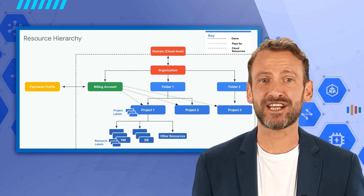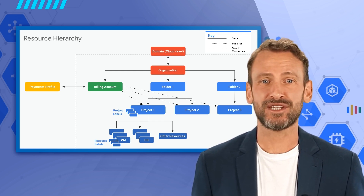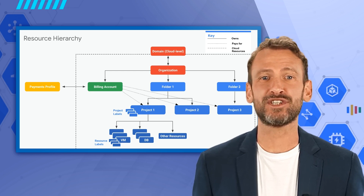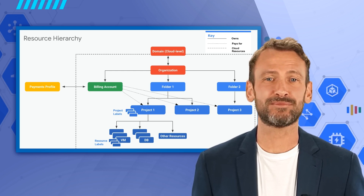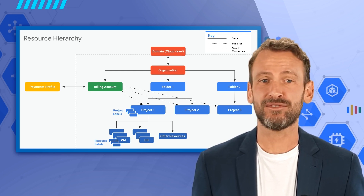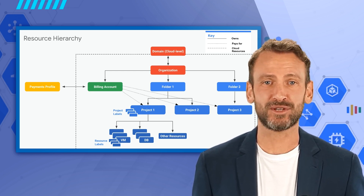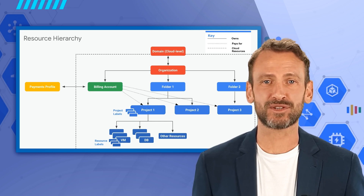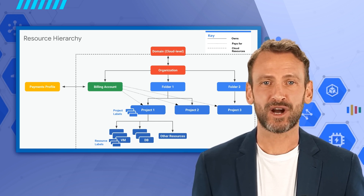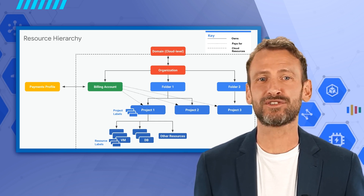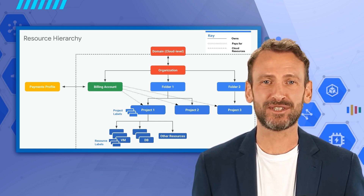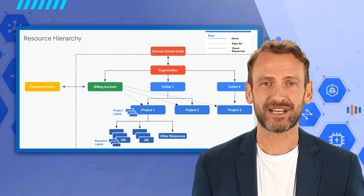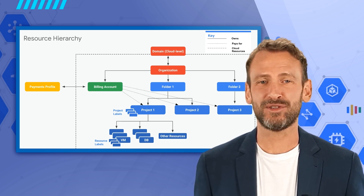Folders are a grouping mechanism and can contain projects, other folders, or a combination of both. To use folders, you must have an organization node. Folders and projects are all mapped under the organization node. All service-level resources are parented by projects, the base-level organizing entity in Google Cloud.